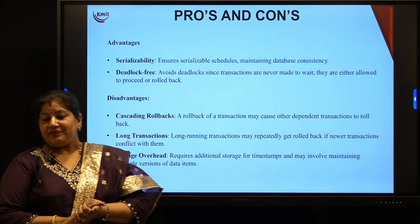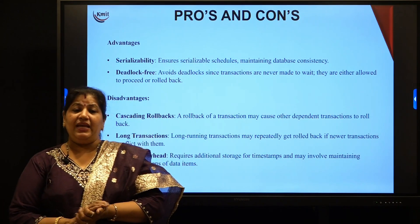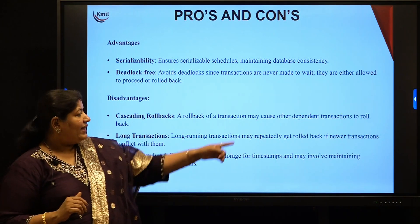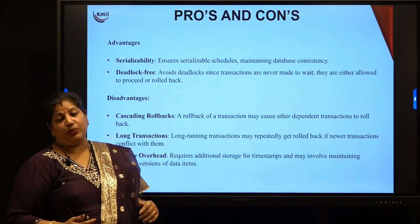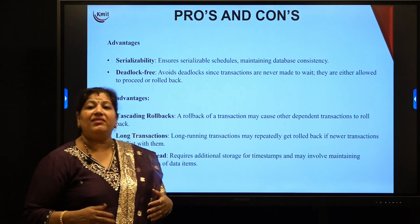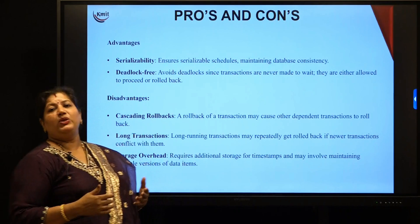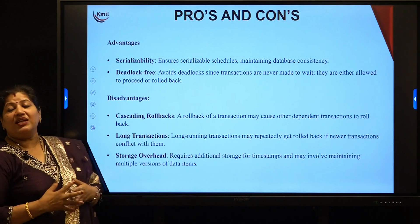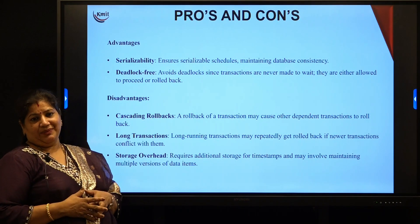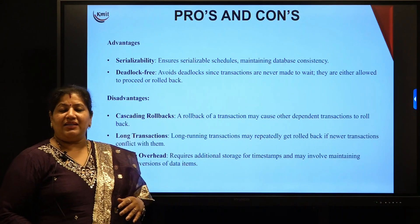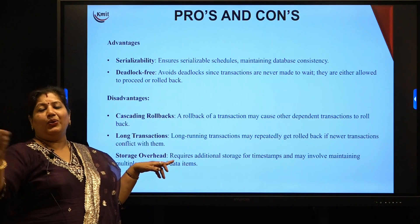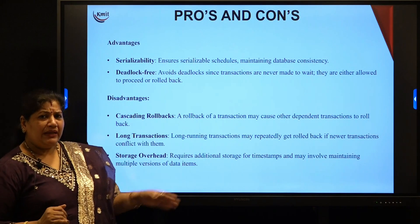Disadvantages: cascading rollback. Whenever serializability cannot be maintained, the older transaction asking for access is asked to roll back. When that rolls back, many dependent transactions may also have to be rolled back, leading to cascading rollback which is a waste of time. Long transactions: long-running transactions may have to roll back again and again due to conflicts with newer transactions. Storage overhead: it requires additional storage for timestamps and may involve maintaining multiple versions of data items — including read timestamp and write timestamp — and every action requires cross-verification with that stored information.